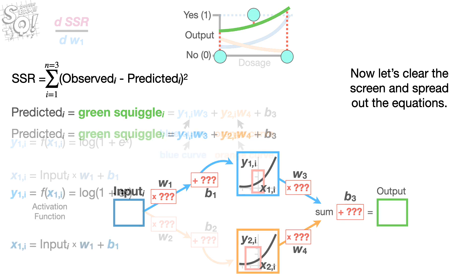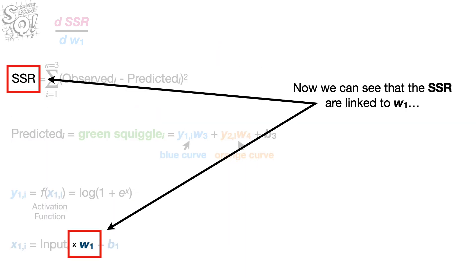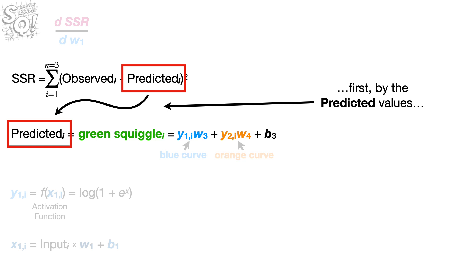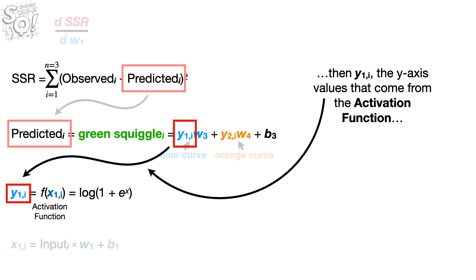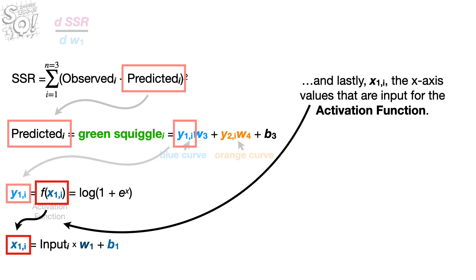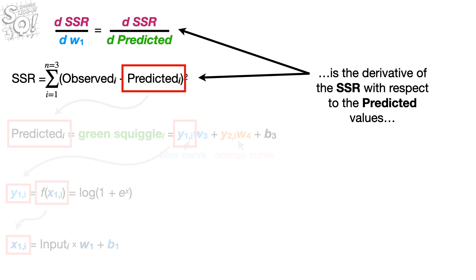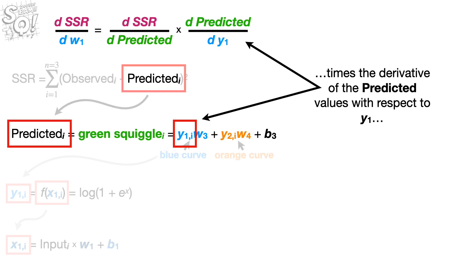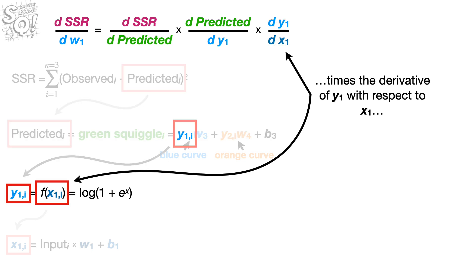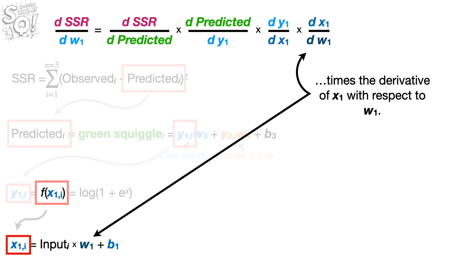Now let's clear the screen and spread out the equations. We can see that the sum of the squared residuals are linked to W sub 1: first by the predicted values, then y sub 1 comma i (the y-axis values from the activation function), and lastly x sub 1 comma i (the x-axis values that are input for the activation function). Thus, the chain rule tells us that the derivative of the sum of the squared residuals with respect to W sub 1 equals the derivative with respect to the predicted values, times the derivative of the predicted values with respect to Y sub 1, times the derivative of Y sub 1 with respect to X sub 1, times the derivative of X sub 1 with respect to W sub 1.